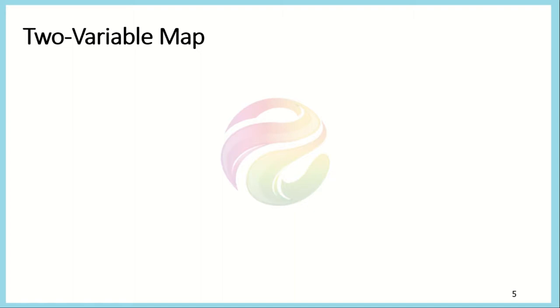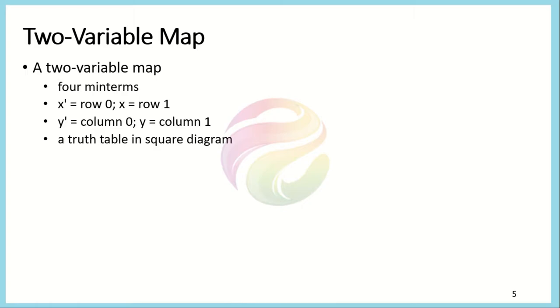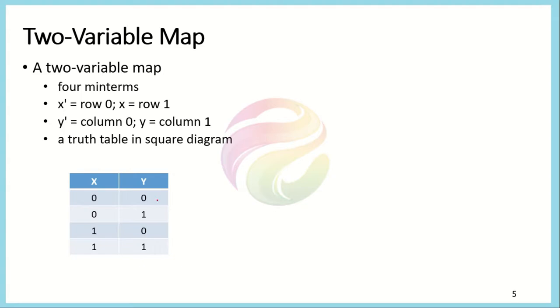First we will be discussing the K-map for the two-variable system. We will discuss K-maps with reference to the number of inputs: first the two-variable, then the three and four-variable K-maps. For the two-variable K-map, for any given two-variable system x and y, we have four combinations of inputs: 00, 01, 10, 11. Each represents a separate minterm: minterm 0, 1, 2, and 3.